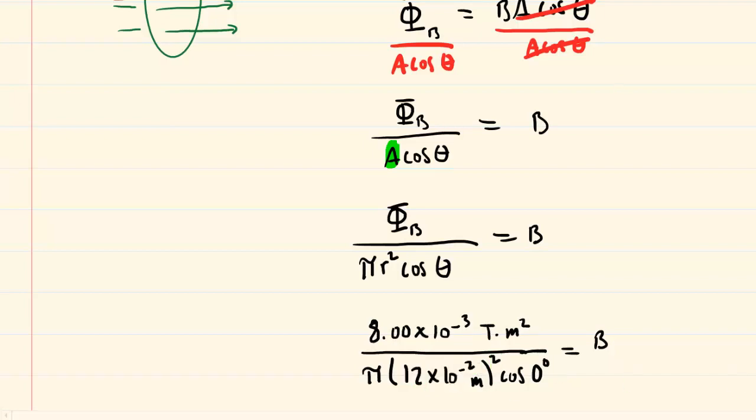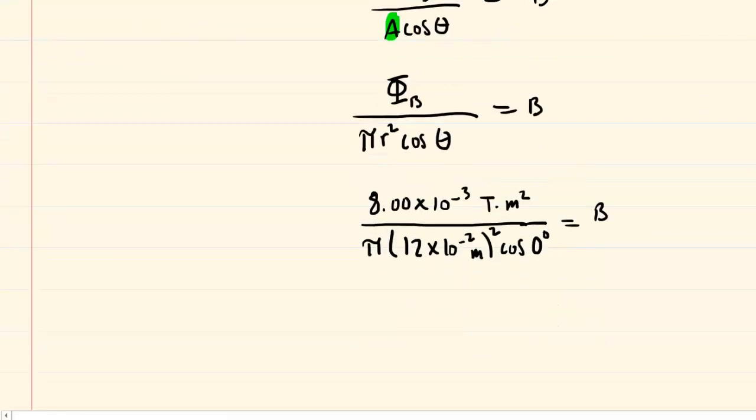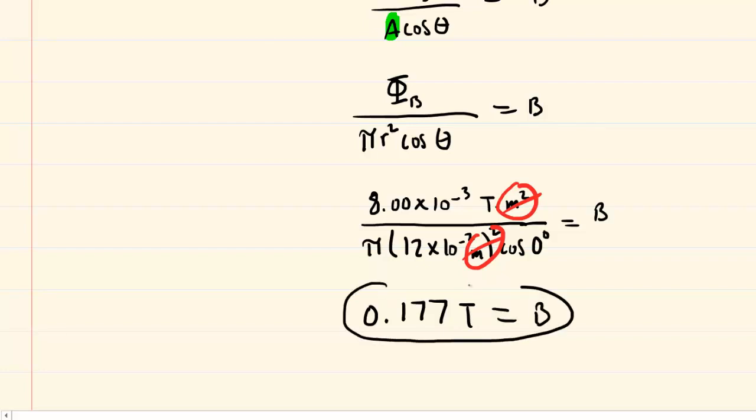So with those things in mind we punch this into our calculators and when we do so we get a magnetic field strength of approximately 0.177, and the unit here will be in Tesla because the meters squared in the numerator and the meters squared in the denominator will cancel out. So this value gives us the correct answer to part A of the question.